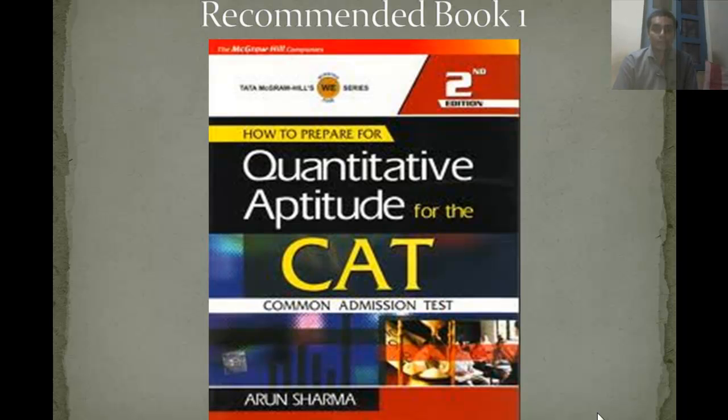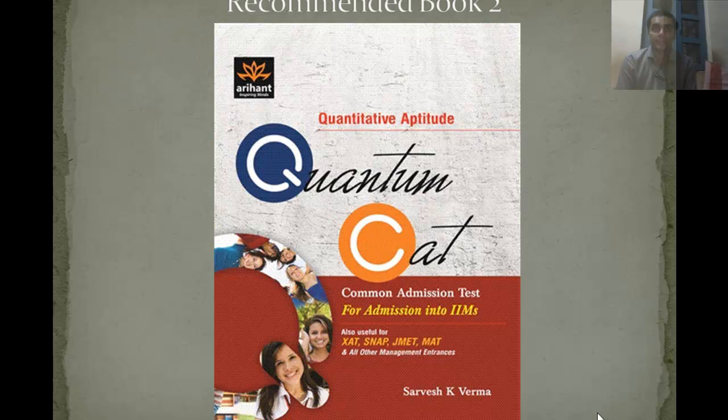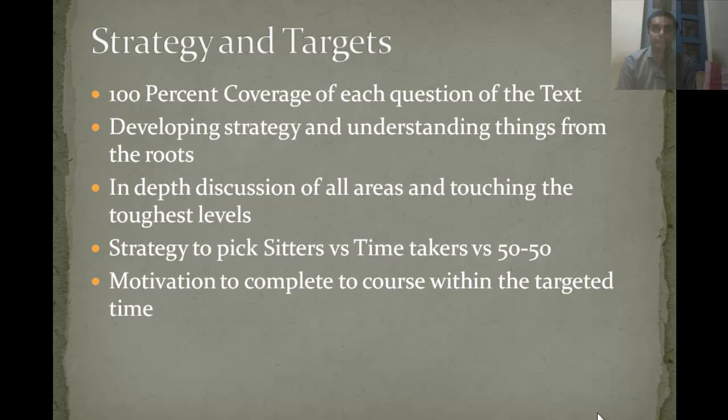For quantitative CAT, I have two books to recommend: Quantitative Aptitude for CAT and Quantum Cat. Now for the strategy and targets, if you're going for the most perfect game, you should solve 100% of either one of these books.